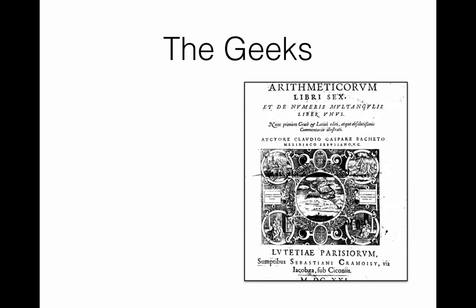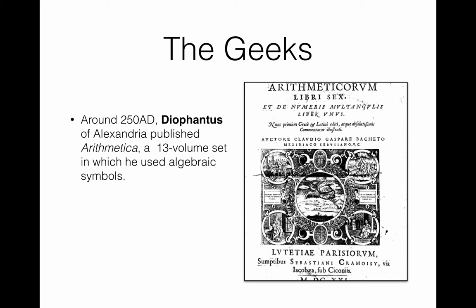After Euclid in about 300 BC, no significant advances were made in number theory until about AD 250, when Diophantus of Alexandria published another 13 volume set called Arithmetica. He became the first Greek to use algebraic symbols extensively in his work. In this text, he solves various types of equations involving two or three unknowns. He sought for integer solutions to these equations. We actually still study Diophantine equations, which are named after Diophantus. We will definitely talk about Diophantine equations this semester.